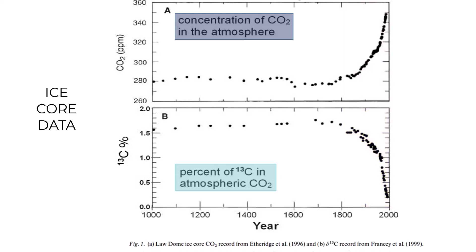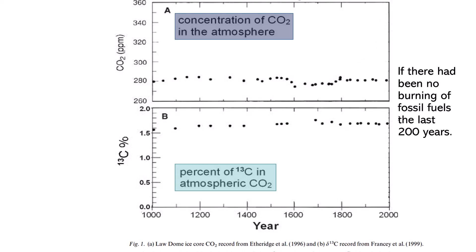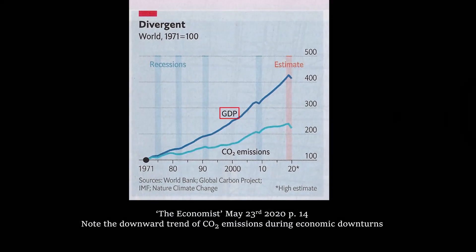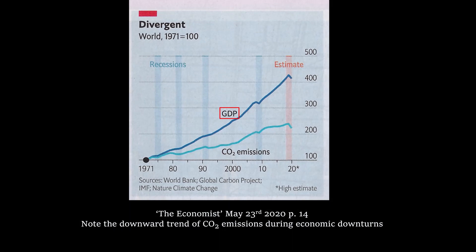And so this graph tells us that it is human activity, specifically the burning of fossil fuels, that has produced the recent dramatic increase in atmospheric carbon dioxide. The isotope carbon-13 CO2 stays constant, while carbon-12 CO2 rises dramatically. If we had not begun to burn fossil fuels, we can assume that atmospheric carbon dioxide would have remained relatively constant, as would the proportion of carbon-13 CO2. Another item of note is the correlation of general human economic activity, known as gross domestic product, with the production of CO2. We see that as economic activity decreases, the amount of carbon dioxide produced decreases as well.